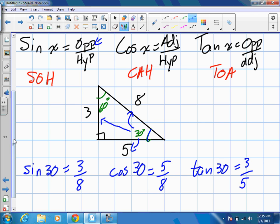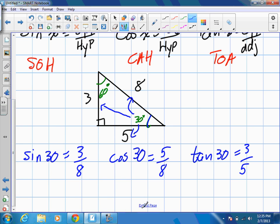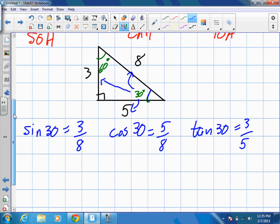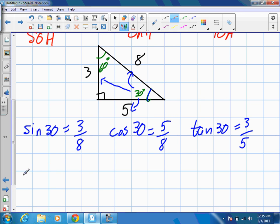And then, what if I were to ask you the opposite angle there? If I were to ask you what sine 60, what would the ratio for sine 60 be? This is the opposite, and this is still the hypotenuse. So we get five over eight.